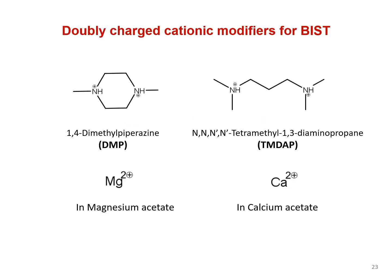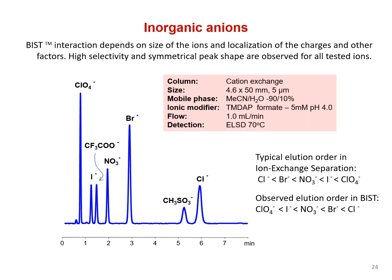So far we have looked only at cation retention with BIST using a sulfuric acid buffer. Now let's see how BIST works with anions. Before we start, we should look at several possible multi-charged ionic modifiers that can be used to retain anions using BIST. This list includes, but is certainly not limited to, DMP, TM-DAP, magnesium ion, and calcium ion. Using a negatively charged cation exchange column and a multi-charged TM-DAP buffer, we were able to retain and separate a mixture of seven different anions. Notice how the elution order is reversed between BIST and typical IE separation.